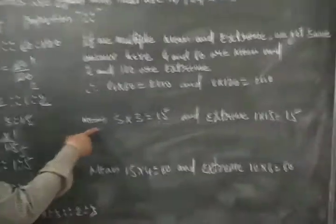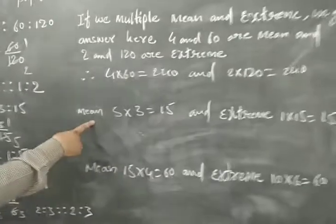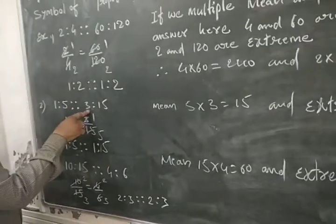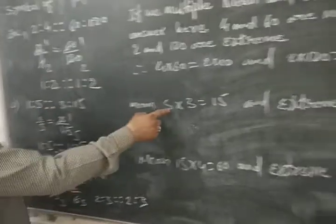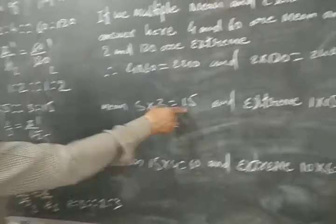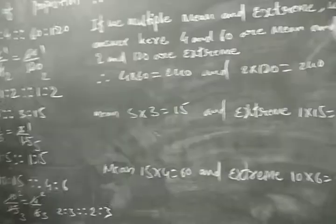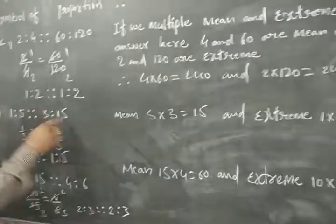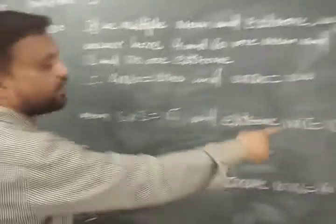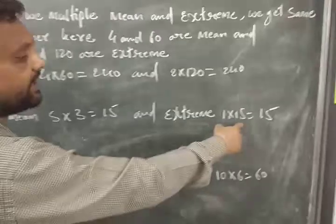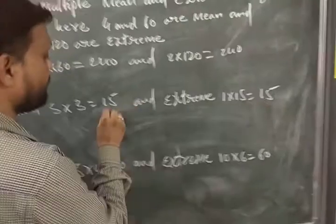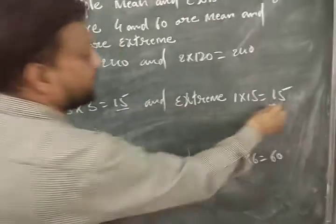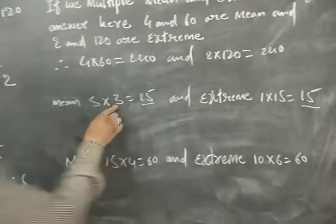Now I take the mean. What are the mean here? Five and three are mean. Five multiplied by three equals fifteen. And the extreme: one and fifteen are extreme. One multiplied by fifteen equals fifteen. Both are same, so this is in proportion.